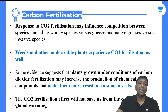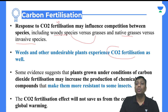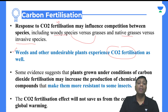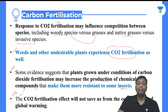Some more information on carbon fertilization: responses to CO2 fertilization may influence competition between species — woody species versus grasses, and native grasses versus invasive grasses. Weeds and other undesirable plants also experience CO2 fertilization, so unwanted plants can also grow. Plants grown under carbon dioxide fertilization may increase production of chemical compounds that inhibit the growth of some insects, giving plants possible resistance against insects. On one side it is a consequence of global warming; on the other side it is a benefit for the living planet Earth.